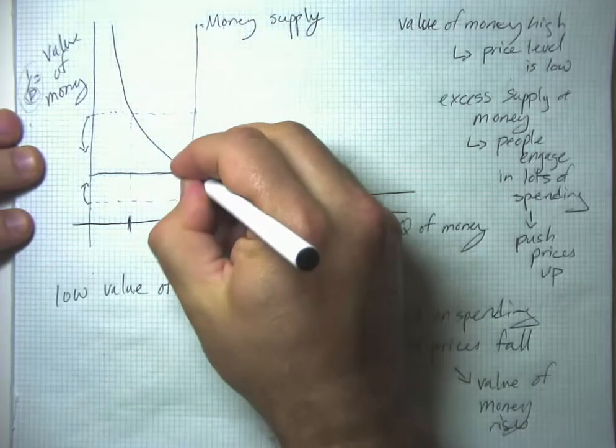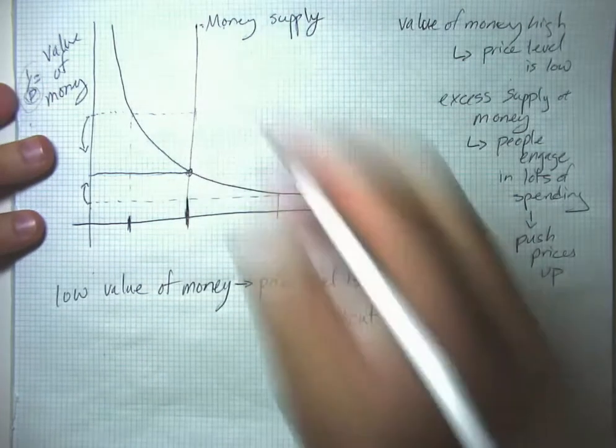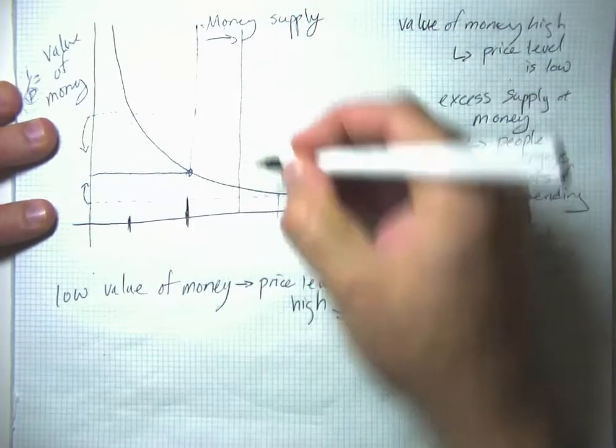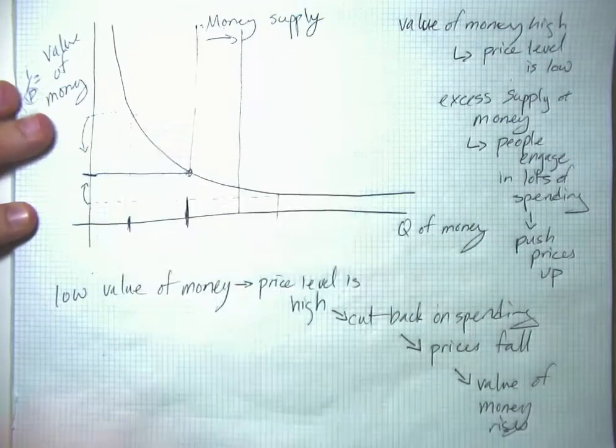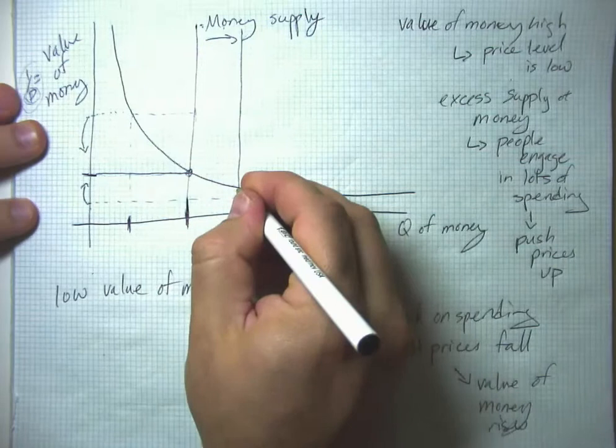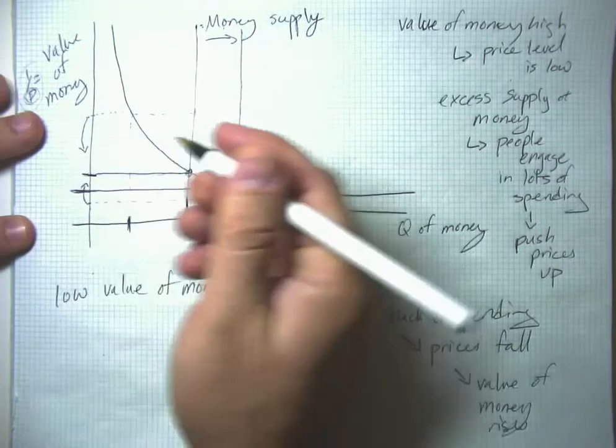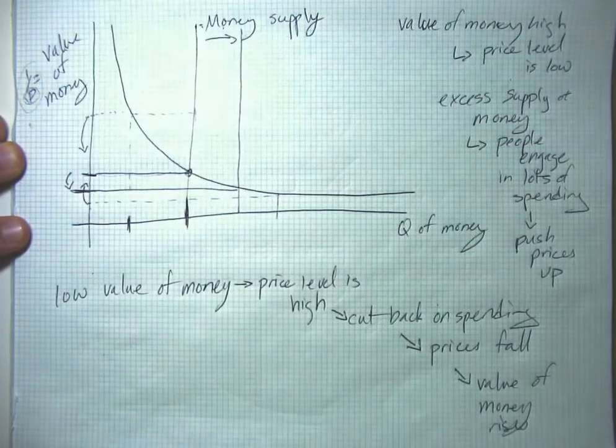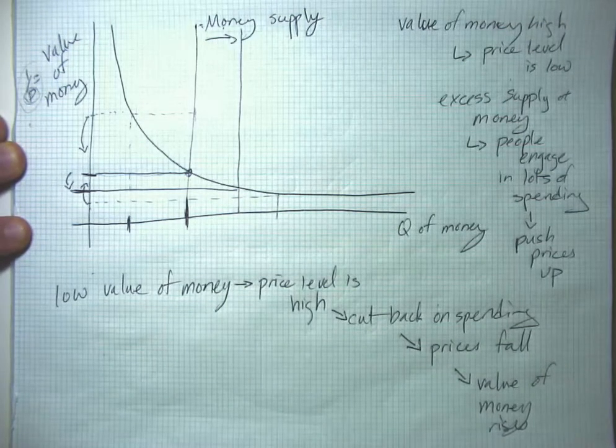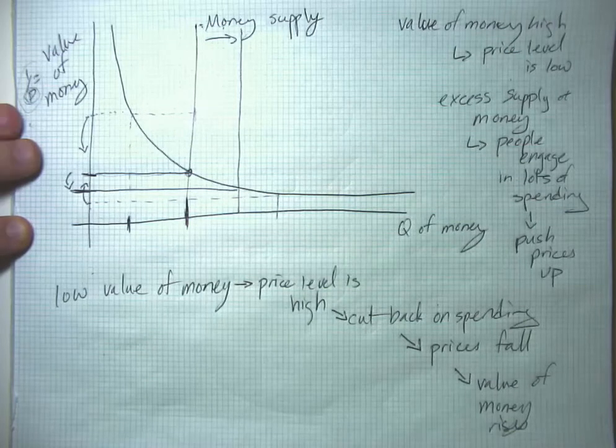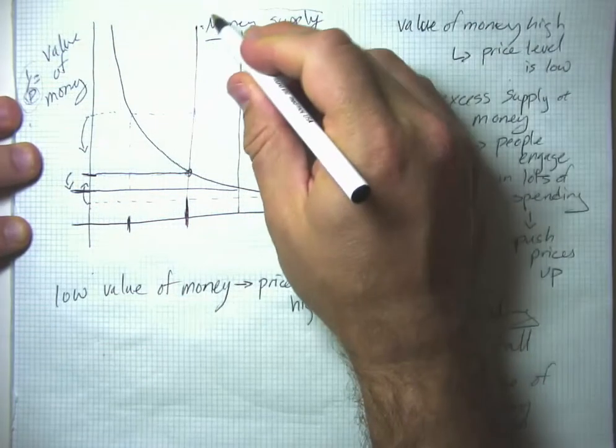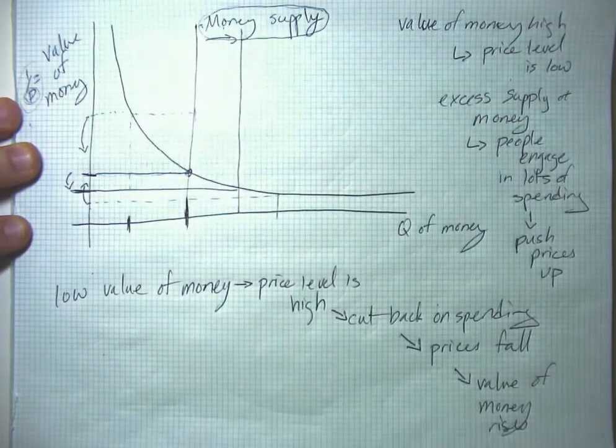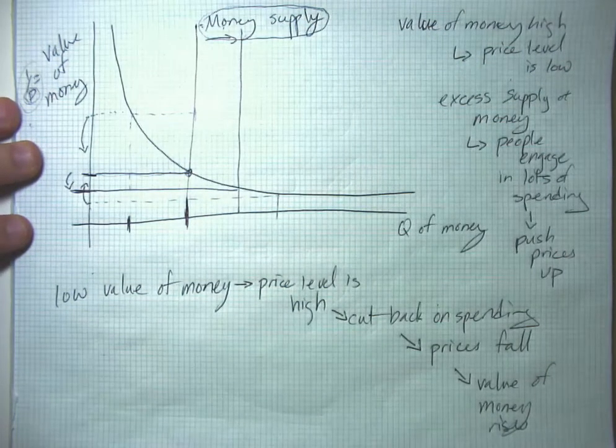And so what happens then, say for instance, if we start here and then we have an increase in the money supply? Well, we change our equilibrium point. We had an equilibrium value of money here at first, and now we have an equilibrium value of money here. So the value of money falls, which is equivalent to saying that the price level rises. So essentially this is our explanation for explaining why and how an increase in the money supply causes inflation.